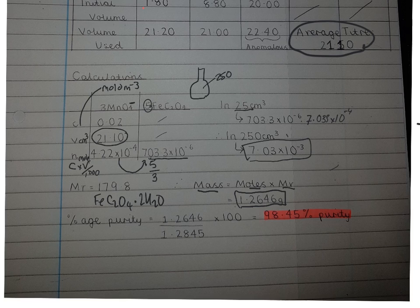So finally, to get the percentage purity, this was the mass that Emma weighed out in a weighing boat, this was the mass that was calculated. So she got a calculation of 98.45% purity. Thank you.